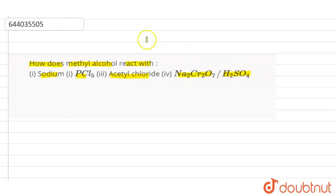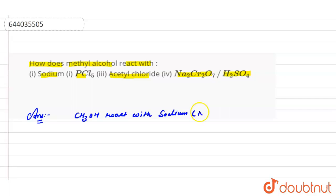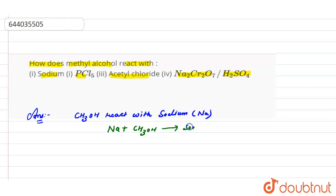When methyl alcohol, that is CH₃OH, is reacted with sodium — molecular formula Na — let's see the reaction. When the sodium metal is added to methanol, a steady reaction occurs to form sodium methoxide.